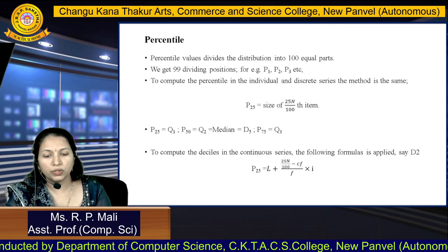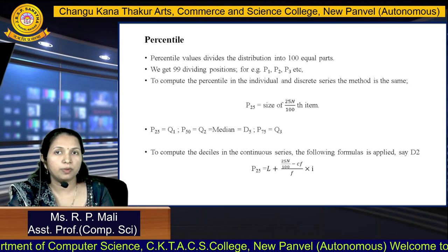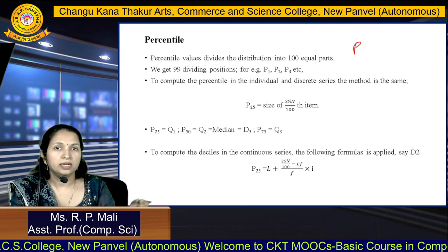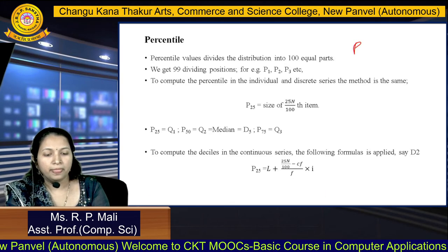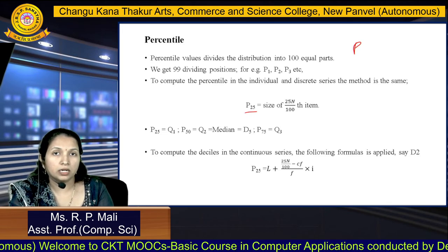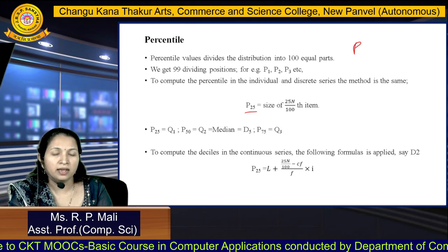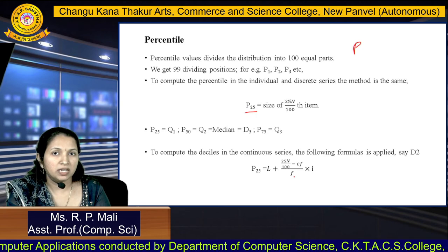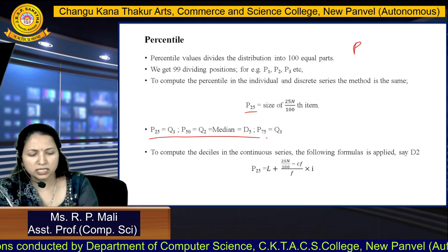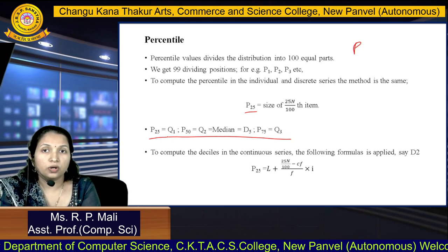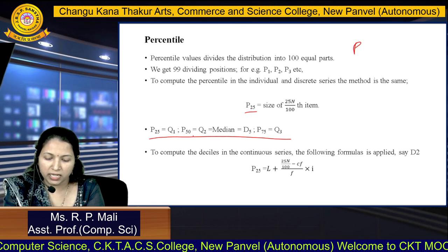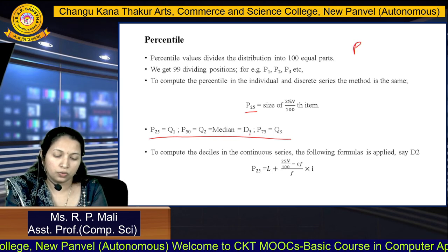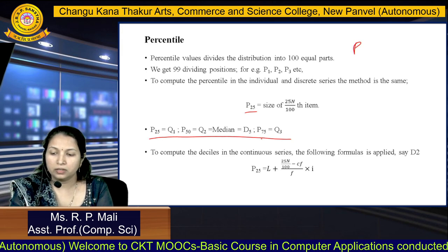Percentile means we divide the whole distribution into 100 equal parts, denoted by P. You get 99 dividing positions: P1, P2, P3, P4, P5 till P99. For example, P25 equals L plus 25n divided by 100 minus Cf divided by F into I. P25 is your first quartile, P50 is your second quartile or median, and P75 equals your third quartile.